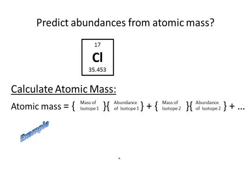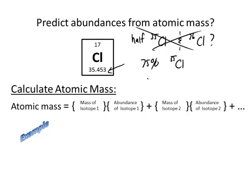But can we predict what the abundances are by looking at this number? And chlorine gives you an example of how you can't. It's very close, the atomic mass for chlorine is very close to 35 and a half. So you might guess that it's half 35 and half 36, but it's not. What it really is is 75 percent chlorine 35 and 25 percent chlorine 37.